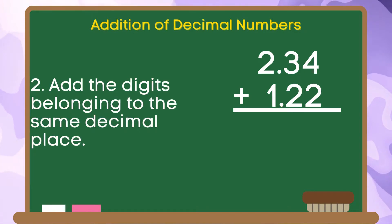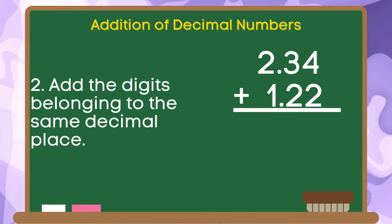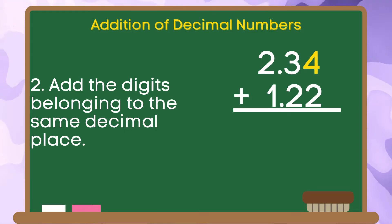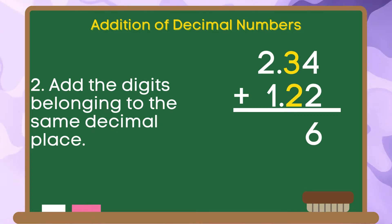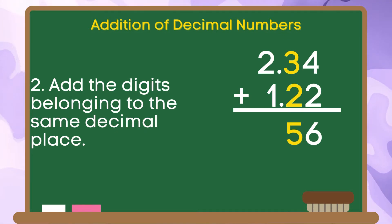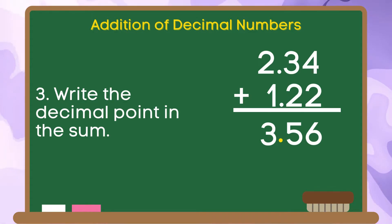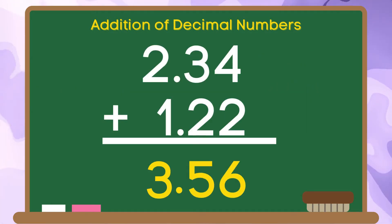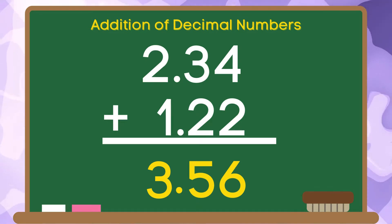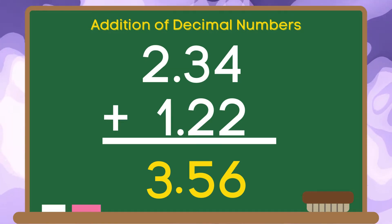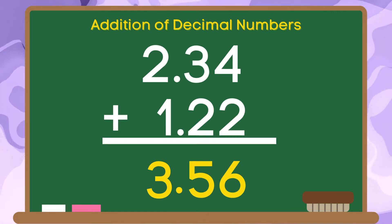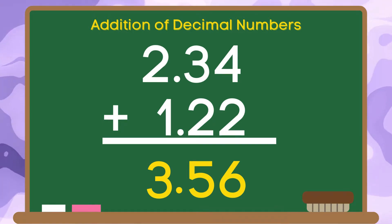Step 2: add the digits belonging to the same decimal place. For step 3, write the decimal point in the sum. Therefore, if you are going to add 2 and 34 hundredths and 1 and 22 hundredths, the sum is 3 and 56 hundredths.